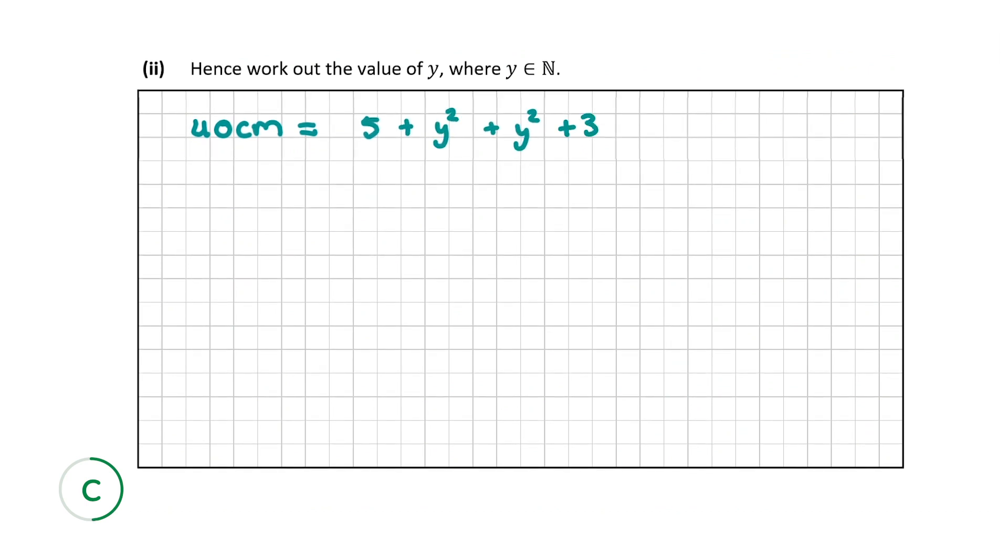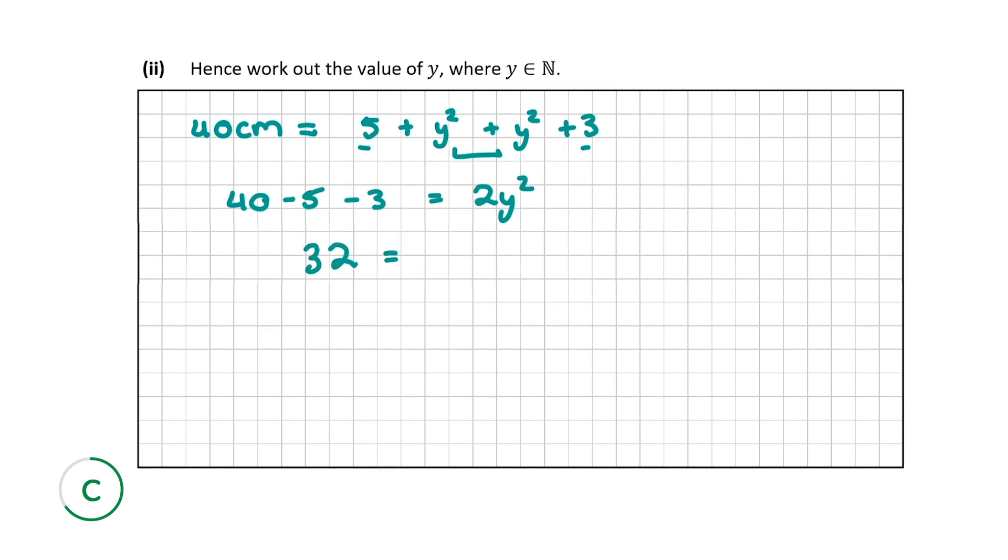Now, so let's find out the value of Y. So what we want to do is we want to isolate the Y. So we have 40 minus 5. We're going to bring these across because they aren't part of the Y squared or Y. So 40 minus 5 minus 3 is equal to, and we can group these together and we can call it 2Y squared. So 40 minus 5 minus 3 is going to give us 32. That's equal to 2Y squared.